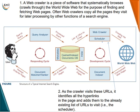The development cycle has two main components: the web crawler and the document indexer. A web crawler is a piece of software that systematically browses the World Wide Web for the purpose of finding and fetching web pages. Often, web crawlers copy all the pages they visit for later processing. As the crawler visits a URL, it identifies all the hyperlinks in the page and adds them to the existing list of URLs to visit, which are present in the scheduler.